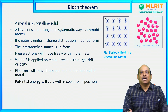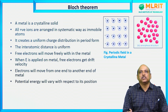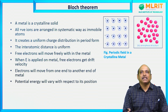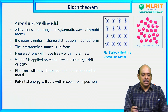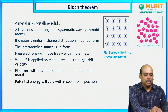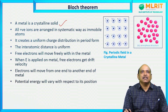To explain Bloch Theorem, I am assuming a periodic field here. Periodic field means it is nothing but a conductor or metal. In general, they will have a periodic field. If you take a metal or conductor, they are crystalline solids. Metals or conductors are crystalline solids — we know that.